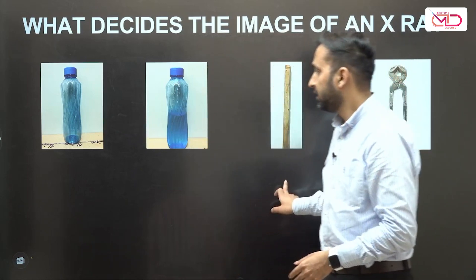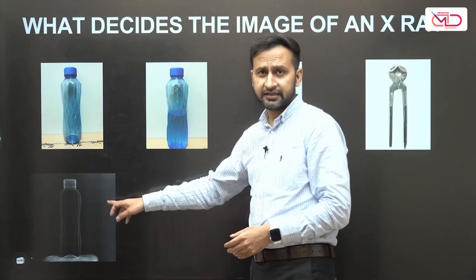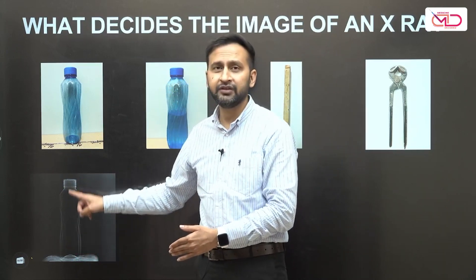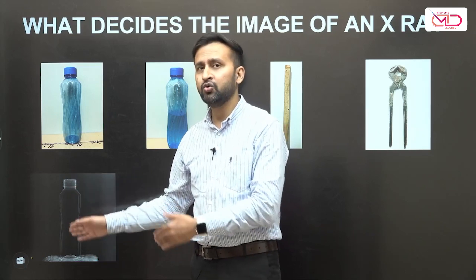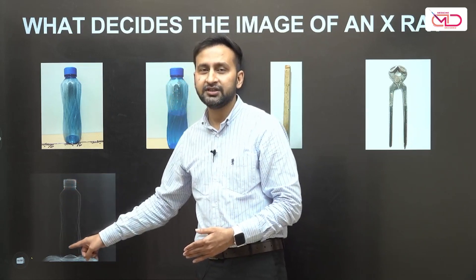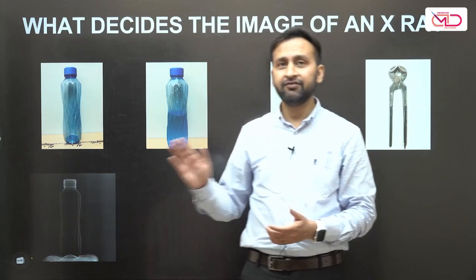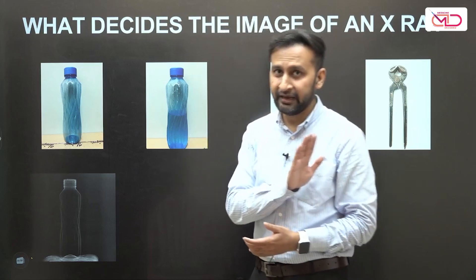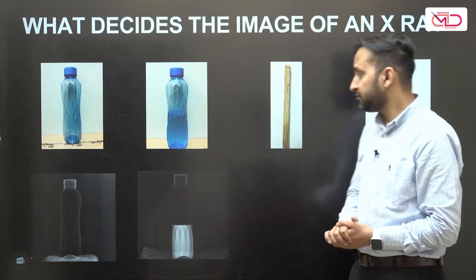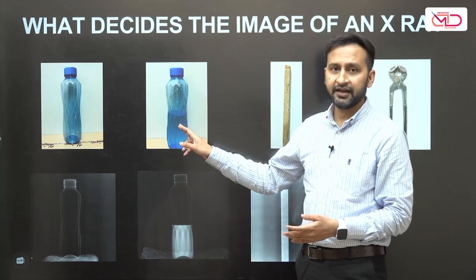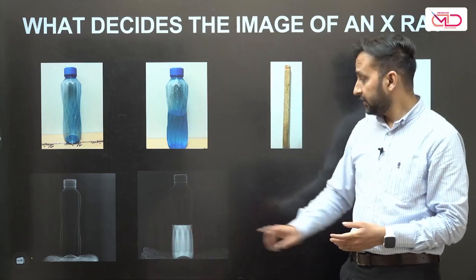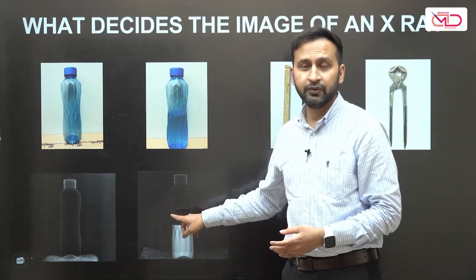We placed them in front of the X-ray tube and took images. In the first case, the completely empty plastic bottle showed no image in its central cavity — it appeared completely black. The faint white color along the edges is that of the plastic. When we repeated the experiment with the bottle half full of water, the water was responsible for producing a white color, while the upper part of the bottle that was unfilled with fluid still showed no color.